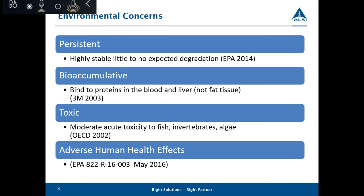Regarding bioaccumulation: C8 and higher carbon chain PFAS bind to proteins in the blood and liver, and not adipose tissue. C6 and lower carbon chain PFAS are more water-soluble and tend to bioaccumulate less, passing out through urine and feces. The bioaccumulation potential increases with the length of the carbon-fluoride chain. Studies have found PFAS in blood samples of the general human population and wildlife worldwide, with higher levels found around industrial areas. PFOA has a half-life in the human body of about 2.3 years.